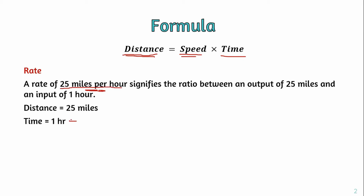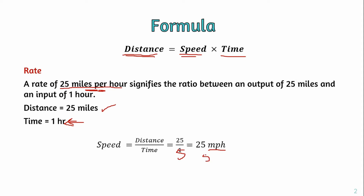For example, at 25 miles per hour, the distance unit is miles. To visualize this, speed is equal to distance divided by time — so 25 divided by 1 gives us 25 miles per hour. If the distance is 25 miles and the time is 5 hours, the speed would be 25 divided by 5, which gives 5 miles per hour.